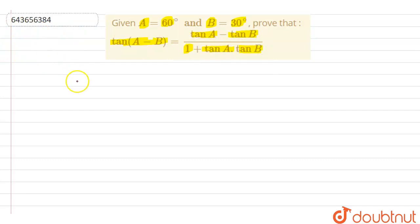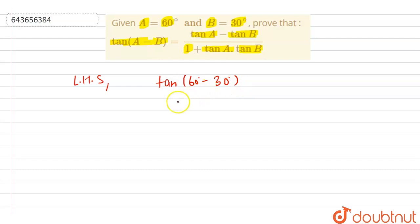Let's first solve the LHS, that means left hand side. At LHS we have tan(A minus B). The value of A is 60 degrees, so 60 degrees minus 30 degrees — the value of B. We can write it as tan(30 degrees), and we know that tan(30 degrees) equals 1 by root 3. So this is the value of LHS.